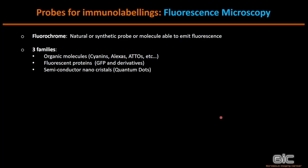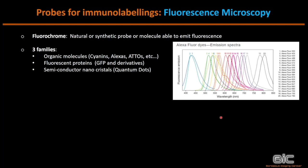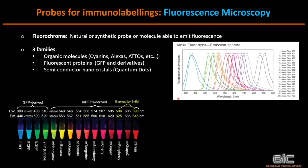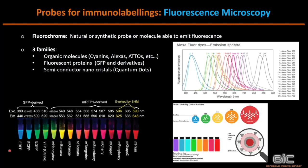We have three families of fluorescent molecules: organic molecules like cyanines, alexas, and atos — a wide range is available; fluorescent proteins, with a very wide range developed particularly by the lab of Roger Tsien — antibodies directed against GFPs can help amplify signal or combine fluorescence and electron microscopy; and quantum dots, nano crystals functionalized to bind to antibodies, where the size of the crystal defines the emission wavelength, giving a range of usable wavelengths.